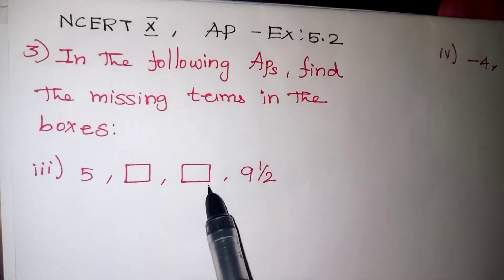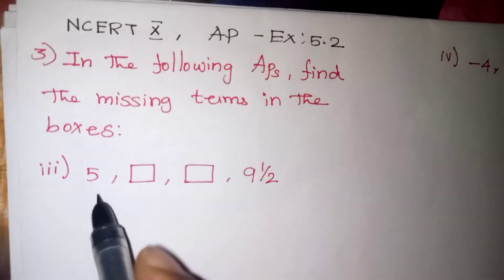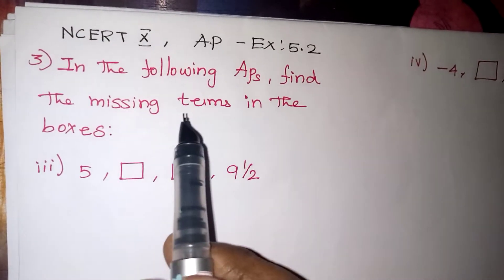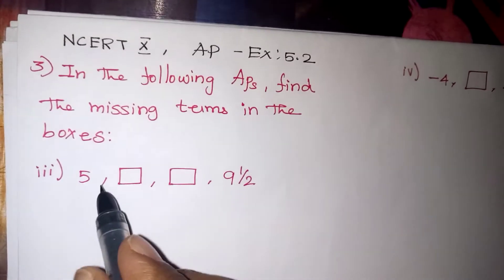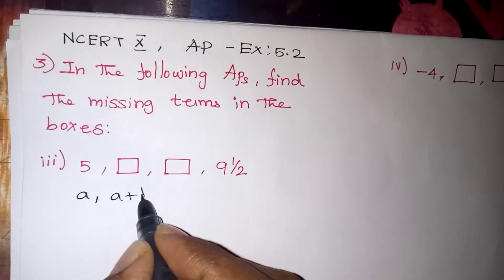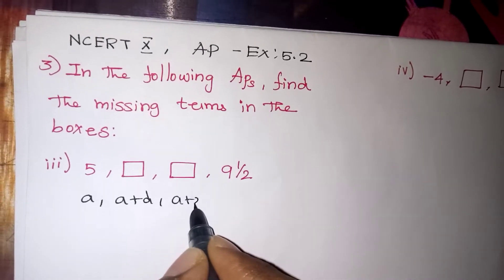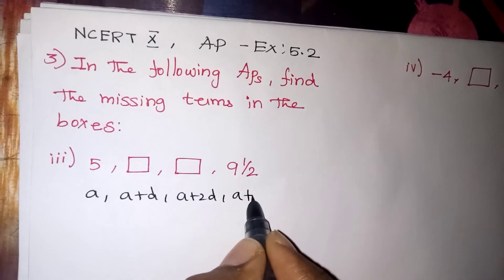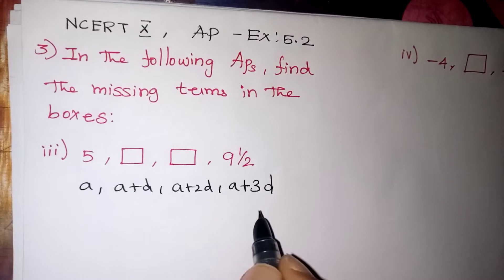First term is given, next two boxes are given and the fourth term is given. Generally, the question is given as AP. So we will take the first term as A, the next term as A plus D and the next term as A plus 2D and the next one will be A plus 3D. That is the general form of AP.